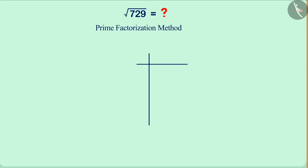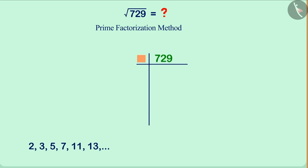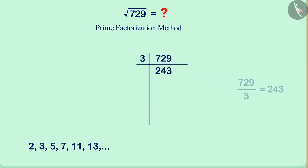We will draw a figure similar to the one on the screen. In the second column of the top row, we will write the number that we wish to factorize. Find the smallest prime number that divides 729 completely — that is 3. Write 3 in the first column of the first line. Dividing 729 by 3 gives us 243. Write it below 729.